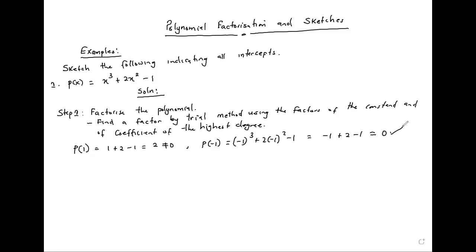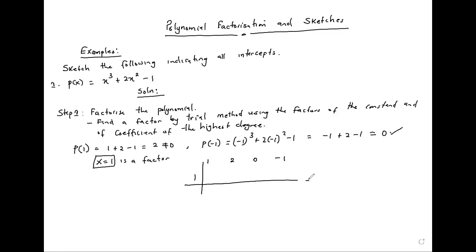When that gives zero, we are saying that x equals negative 1 is a factor. So in synthetic division, get the coefficients of the polynomial: for x cubed we get 1, for x squared we get 2, for x we get 0, and we get negative 1.